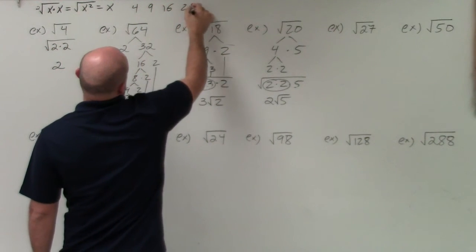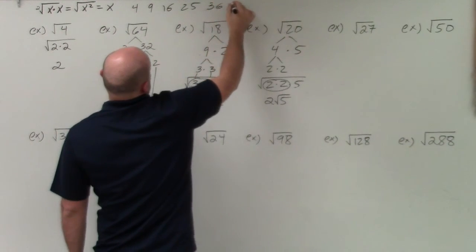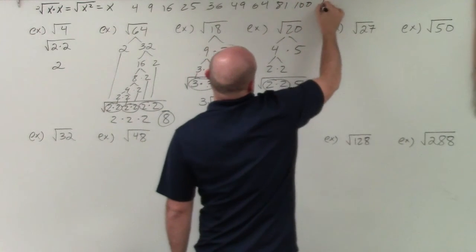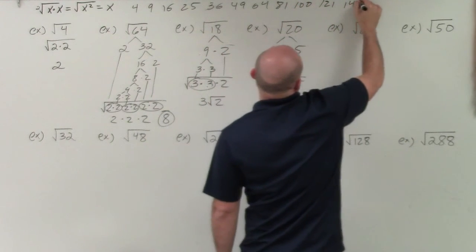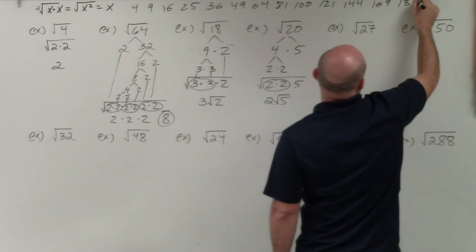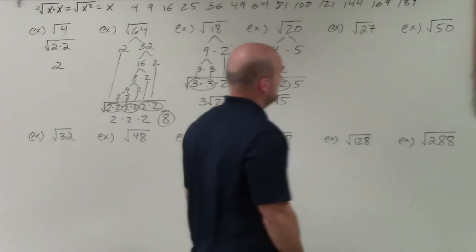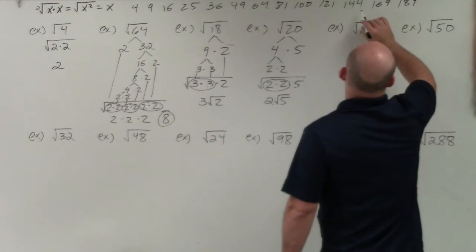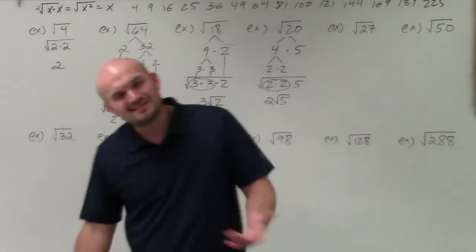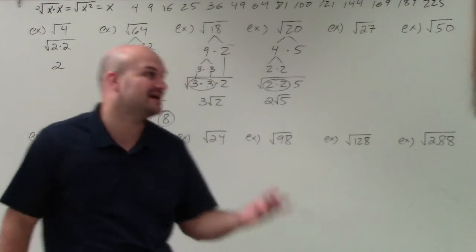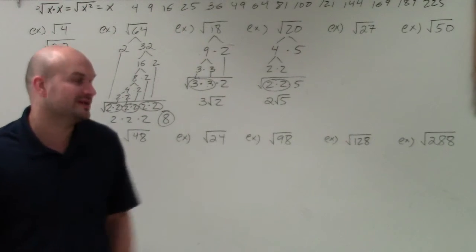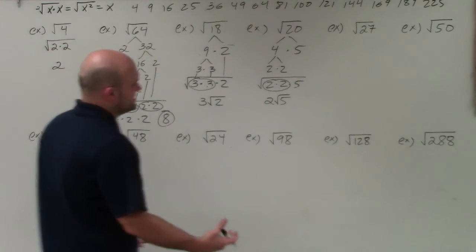I'll list some perfect square numbers: 4, 9, 16, 25, 36, 49, 64, 81, 100, 121, 144, 169, and 225 — that's the squares of 1 through 15. I wouldn't say you have to know all of those, but it's very helpful. At least up to 12 squared is what we'll be working with in this video.